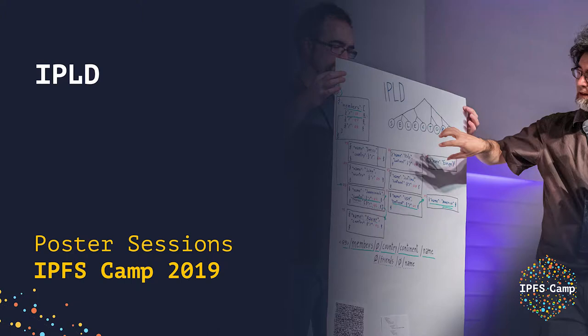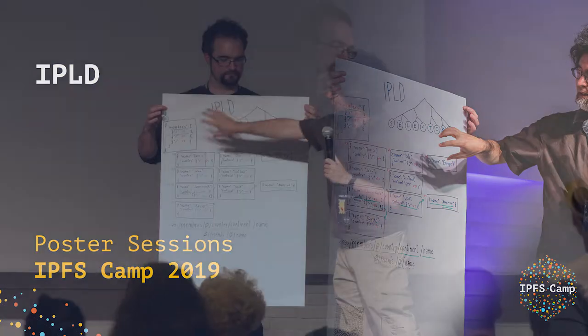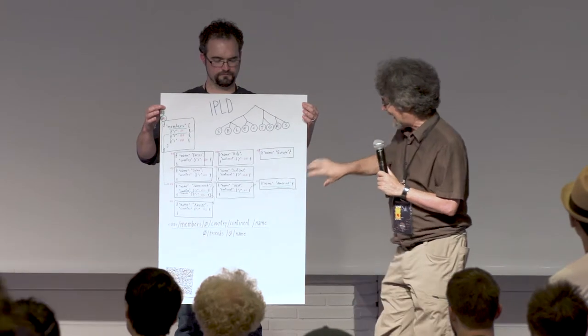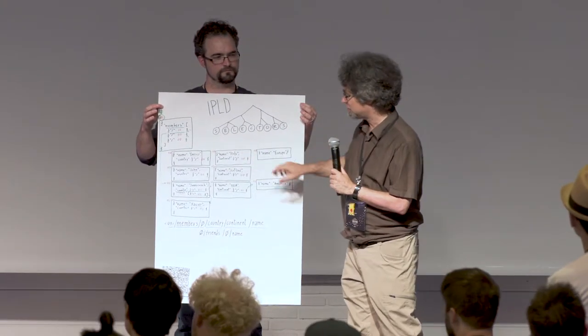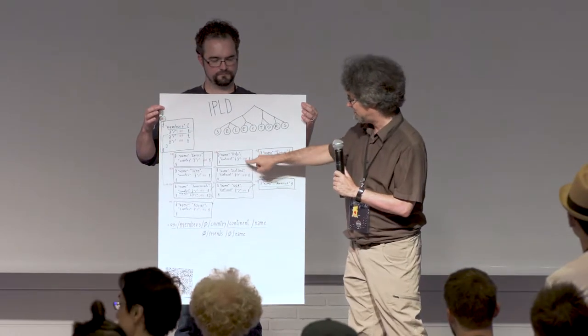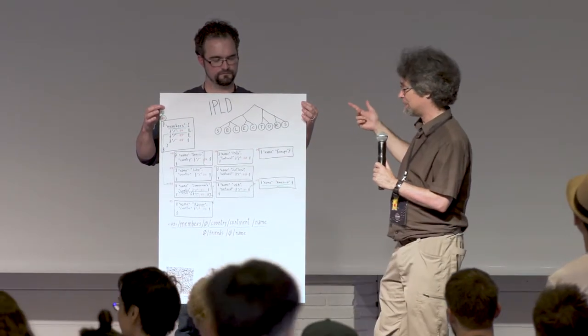IPLD selectors. Imagine this bunch of little data atoms. Each of them, like JSON, has a structure. And we want to navigate not just to specific data within the atoms, but across the atoms.